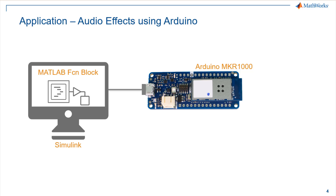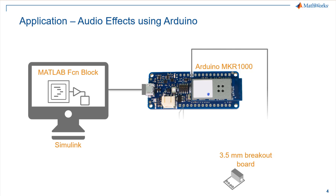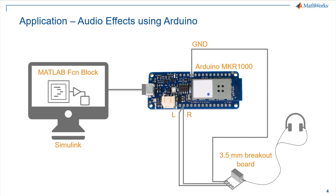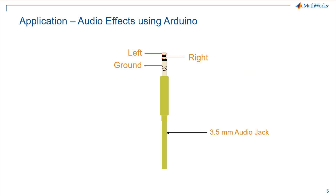The audio output is available at the DAC pin of the board. In order to hear this, I used a 3.5mm audio breakout board and connected it to the DAC pin and the ground pin on the board. A headset or earphone can now be connected to this breakout board. If you don't have this audio breakout board, you could simply wrap wires around the audio jack of your headset and connect it to the DAC and ground pins on the board appropriately.